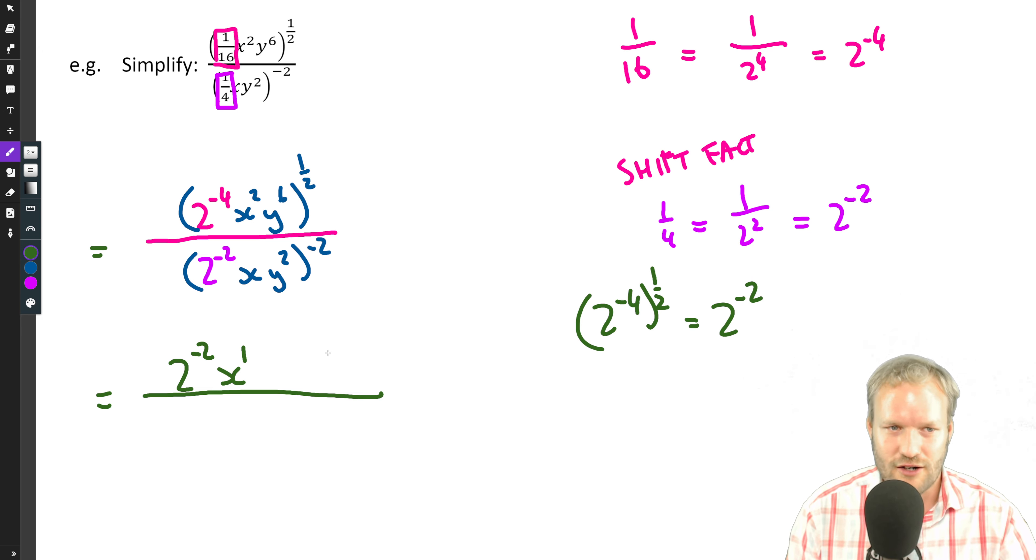So x squared to the half, multiply exponents, that's x to the power of one because two times a half is one. Next up, we have y to the six to the half, six times a half is three. And so we can go—let me just look at this two to the negative two in more detail.